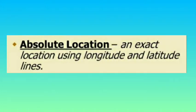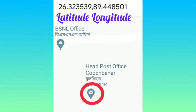Absolute location tells us the exact position where a place is located on the surface of the earth. For example, if I ask you where your home is, you would tell me your home address. Or if someone wants to know where the post office is, you would give the exact location — the exact point where that particular place is located.